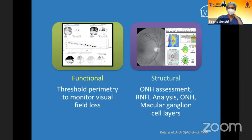We can detect change or progression through two types of evaluation: structural assessment of the optic nerve head and the retinal nerve fiber layer, and functional assessment by threshold perimetry as well as other newer perimeters.